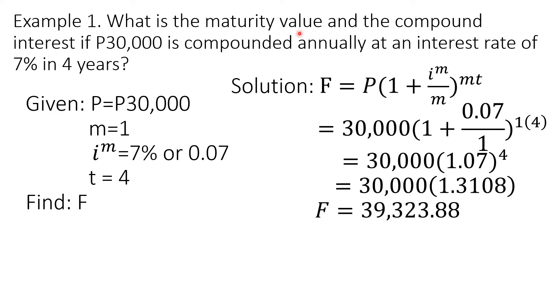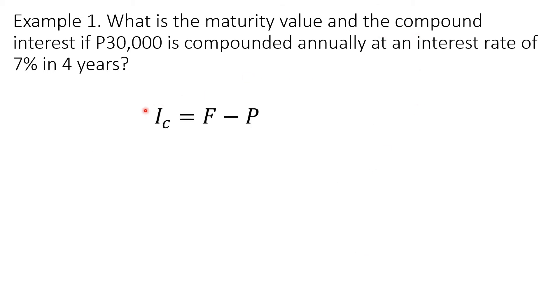How about the compound interest? Now for the interest, the formula for the compound interest I_c is equal to F minus P. Now that we have a value for F, we may now solve for I_c. By substitution, this is 39,323.88 minus 30,000. So the compound interest is 9,323.88 in 4 years.